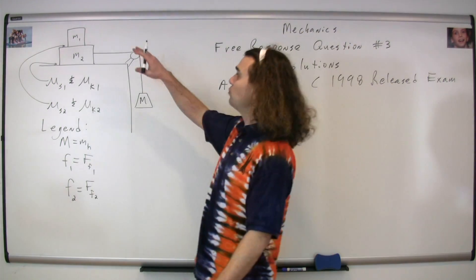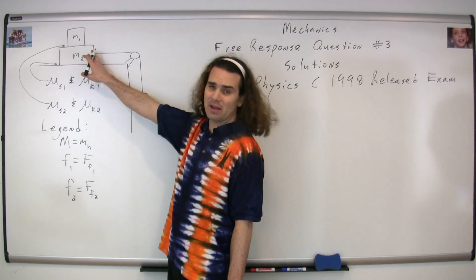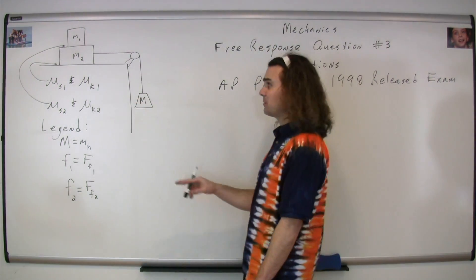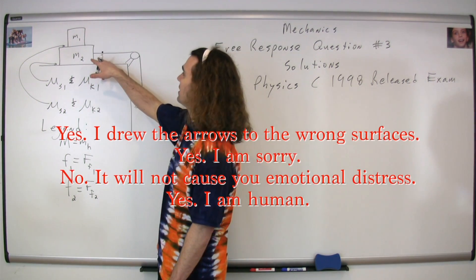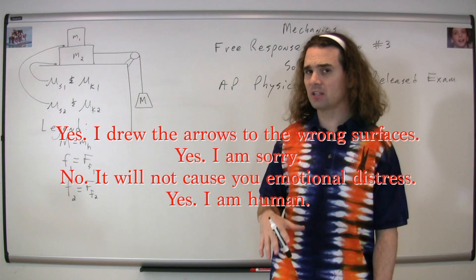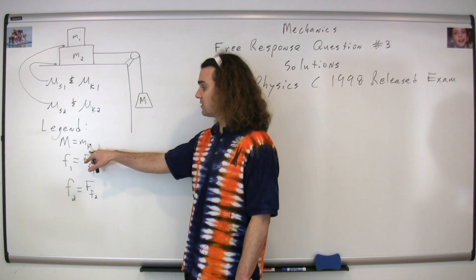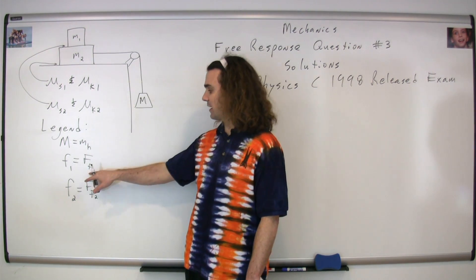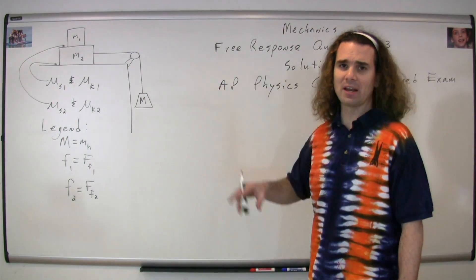Question number three. We have two blocks, block one and block two. One is on top of two and block two is on top of a table. Block two has a string attached to it which goes over a pulley and is attached to a block capital M. There is friction between the two blocks labeled coefficient of static friction one and coefficient of kinetic friction one, and between the second block and the table we have coefficient of static friction two and coefficient of kinetic friction two. Rather than using capital M, I'm going to use lowercase m sub h for mass hanging. For the forces of friction, I'll use capital F lowercase f with a one for force of friction one and force of friction two.